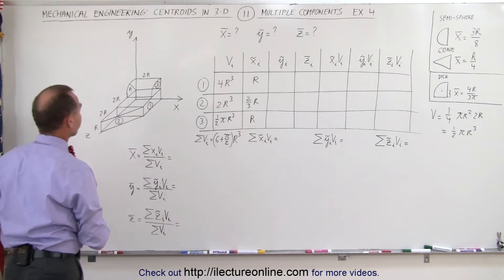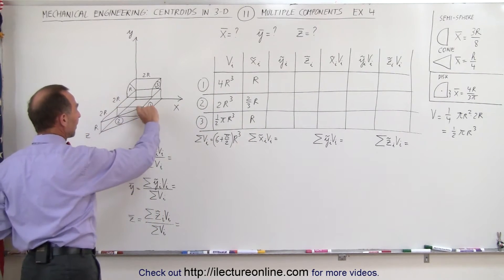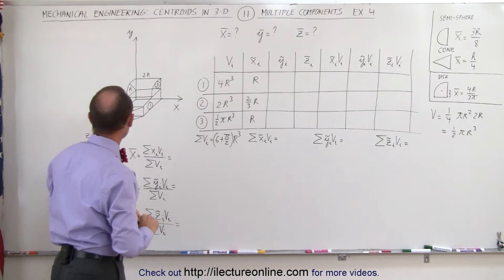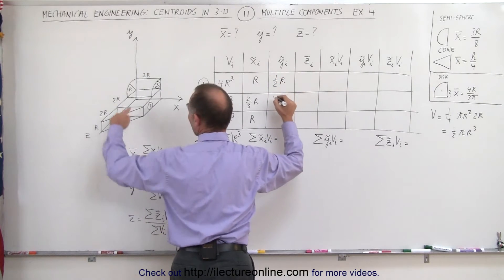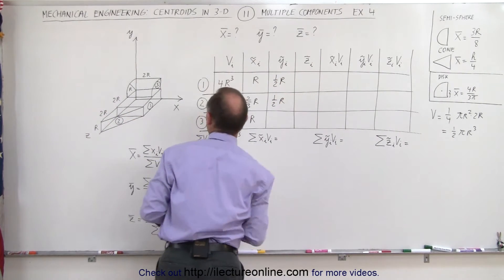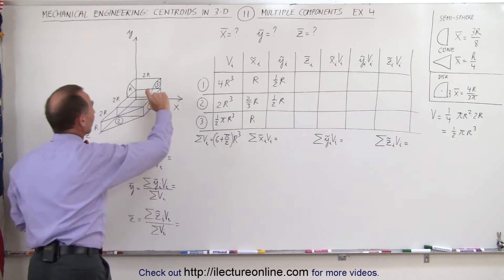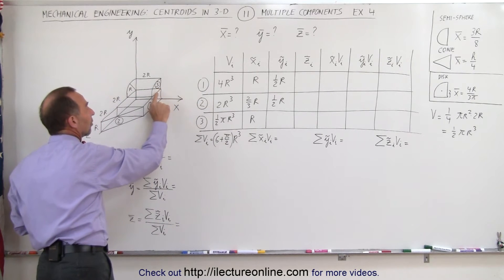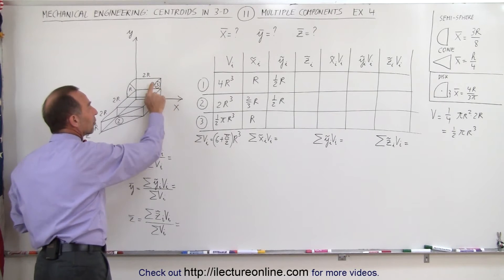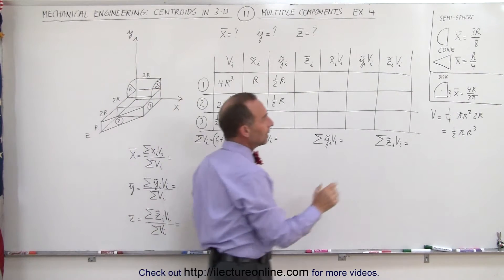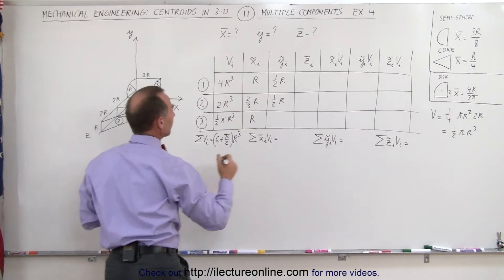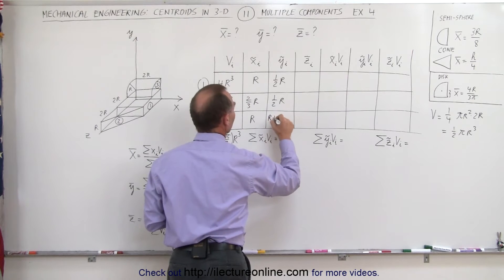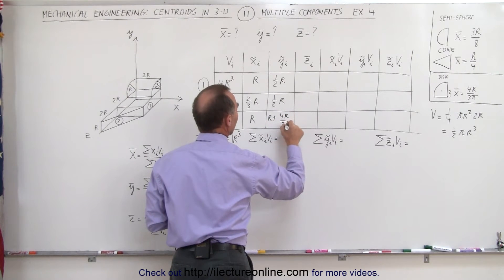In the y-direction, for the rectangular slab it's half the distance from bottom to top, so ȳ₁ = r/2. Same for the triangular slab: ȳ₂ = r/2. For the quarter cylinder, it's r plus the distance from the base to the centroid in that direction, which is 4r/(3π), so ȳ₃ = r + 4r/(3π).